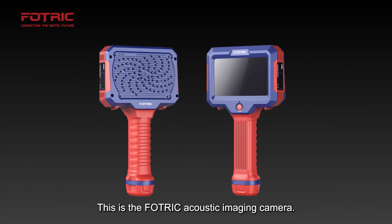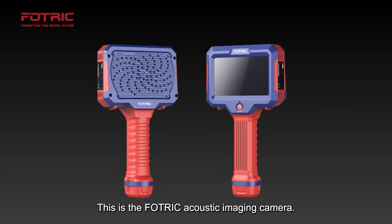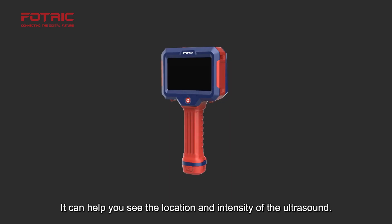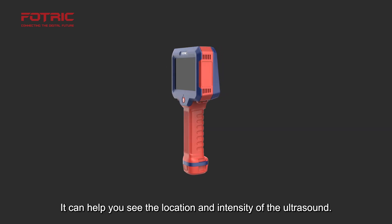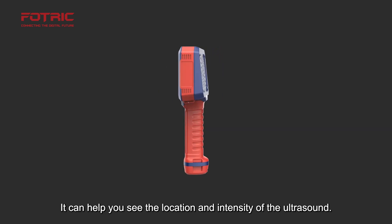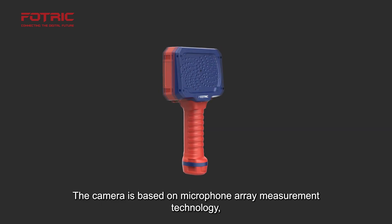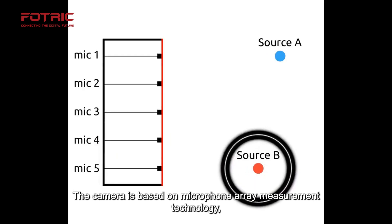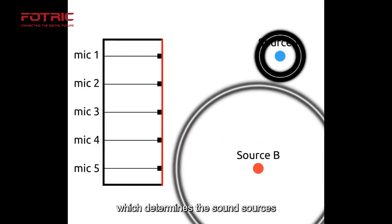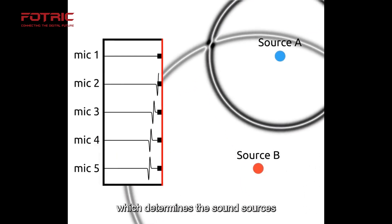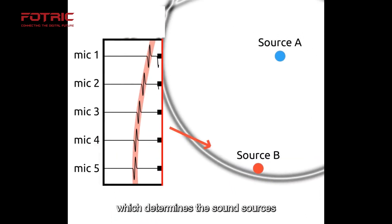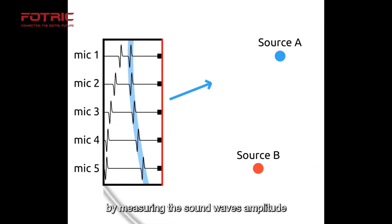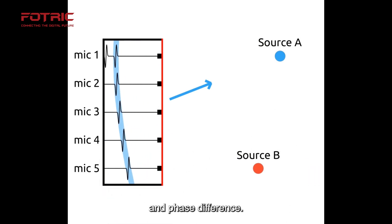This is the FOTRIC Acoustic Imaging Camera. It can help you see the location and intensity of the ultrasound. The camera is based on microphone array measurement technology, which determines the sound source's position and intensity by measuring the sound wave's amplitude and phase difference.